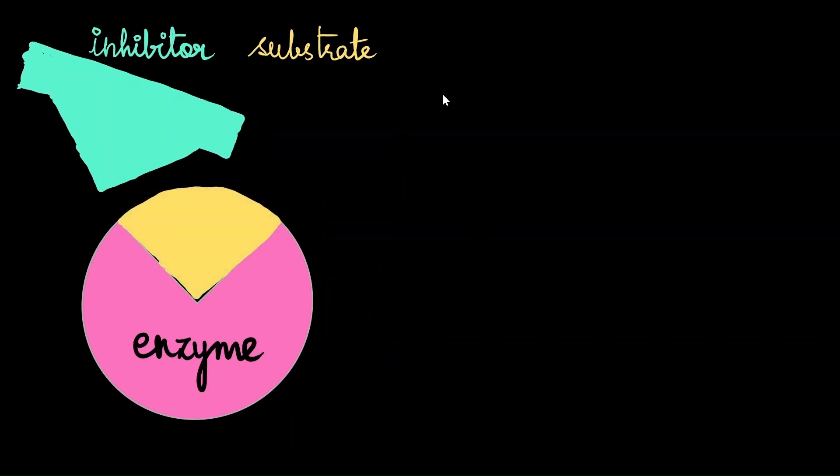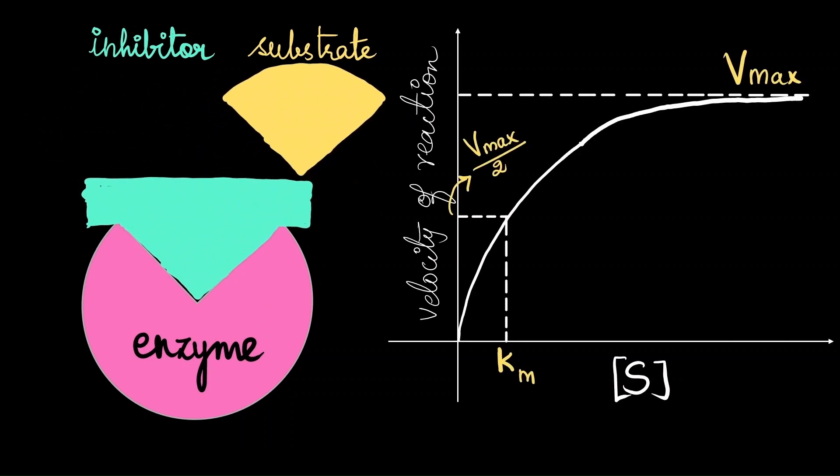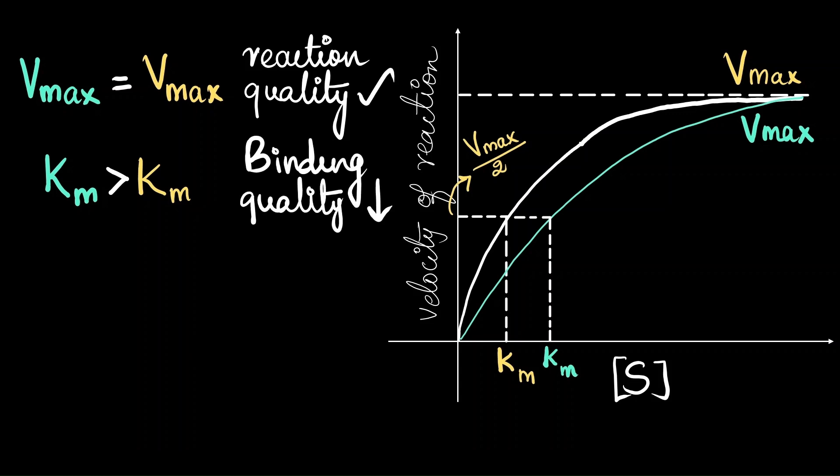This graph represents the velocity of a reaction when there is no inhibitor present. But in competitive inhibition, this is how the graph looks like. We see both the curves have the same Vmax. But if we were to plot the Km, we can see that there is a slight difference. Vmax of the curve where there is enzyme inhibition is similar to the Vmax when the reaction is uninhibited, meaning the quality of the reaction is maintained. But the Km value of the inhibited reaction is more than the Km value of the uninhibited reaction, which means that the binding quality of enzyme and substrate is lowered. So, overall, this leads to a slow reaction.